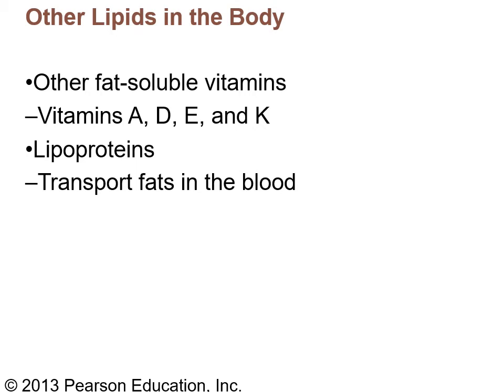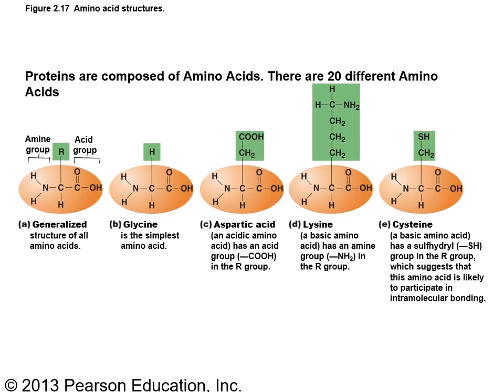Some vitamins are fat-soluble — A, D, E, and K — and you need fat to help absorb these through the GI tract. B and C vitamins are water-soluble; you can take larger quantities and simply excrete the excess — they don't store up. Fat-soluble vitamins can be toxic in large quantities because they accumulate in tissues. Lipoproteins have a lipid part and a protein part and help transport fats in the blood.